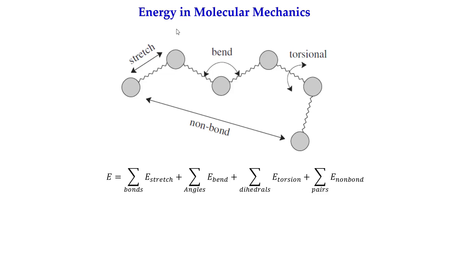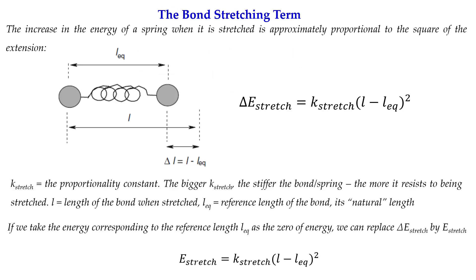Now we will explicitly define how the E_stretch function looks and how all the other terms can be mathematically calculated. For the bond stretching term, consider a bond at equilibrium between two atoms connected by a spring at equilibrium length. When you stretch the bond, the energy will approximately be proportional to the square of the extension: ΔE_stretch = k_stretch × (l − l_eq)².